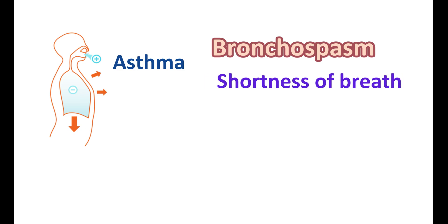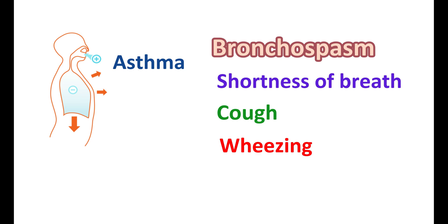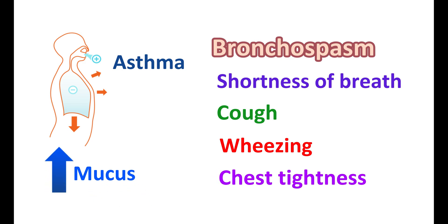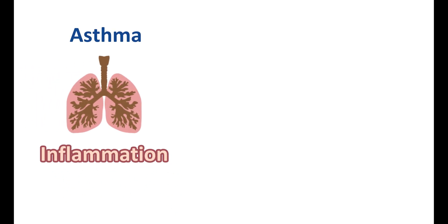Due to inflammation, bronchial air pathways are constricted, resulting in symptoms like shortness of breath and difficulty breathing. It may also result in cough and wheezing — a sound observed during inhalation as well as exhalation — indicating that the bronchial air pathways are constricted. People may also have chest tightness and increased mucus production, which further complicates airflow. The root cause of asthma mainly involves inflammation of bronchial air pathways.